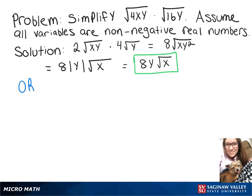Now, the other way that we can do this is just by multiplying everything underneath the radical right away. So that will give us the square root of 64 times x times y squared.